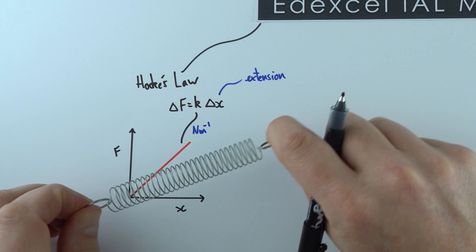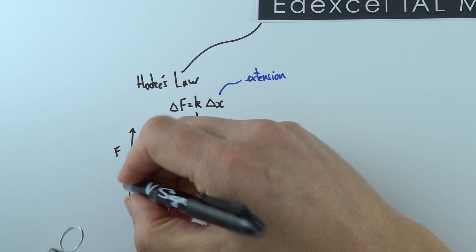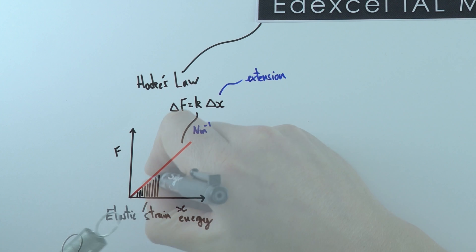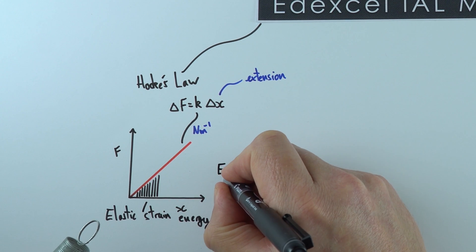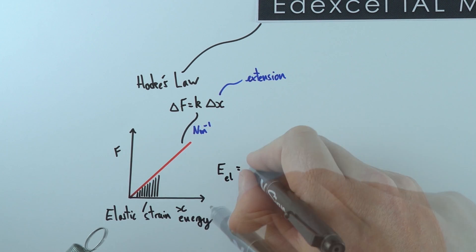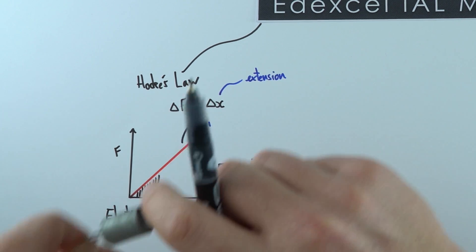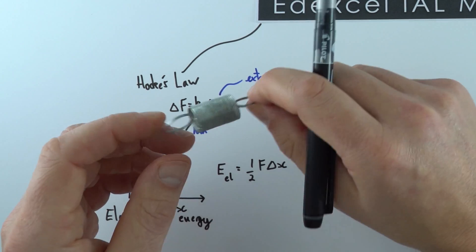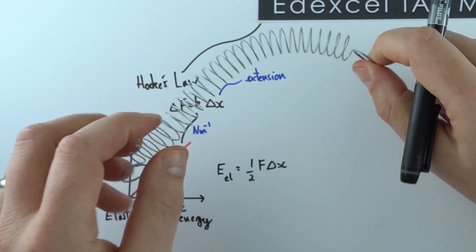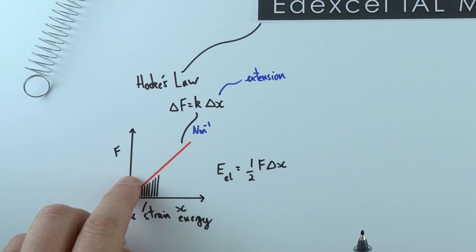When that spring has been deformed it's storing energy in the form of elastic strain energy, which is equal to the area underneath that line. The elastic strain energy (E_l) equals one-half F Δx, which is just the area of that triangle. This is provided we have elastic behavior and haven't gone beyond the limit of proportionality, where we'd then have permanent deformation and plastic behavior.